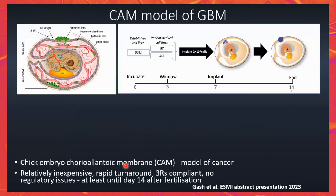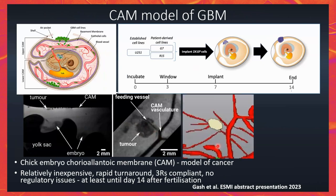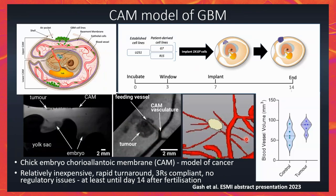In the chick embryo model, you implant tumors in the CAM membrane and observe the tumors grow. You can do MRI and actually see the tumor and the vessels feeding it. Processing the data, you can see that the blood vessel volume in the tumor or the feeding region is higher than in normal, unimplanted areas.